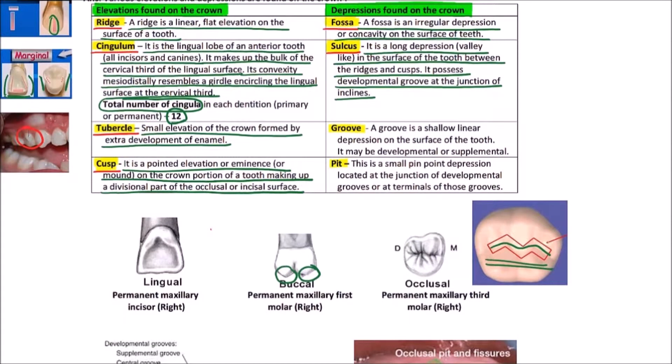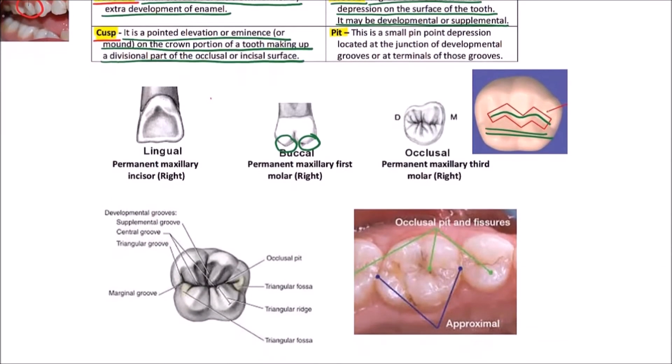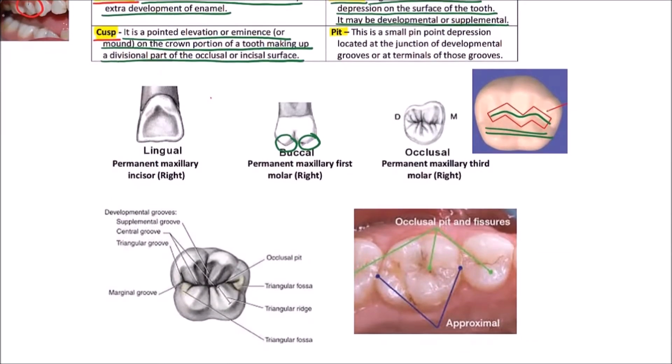Now, next one is groove. The groove is a shallow linear depression on the surface of the tooth. It may be developmental or supplemental. Here we can observe the triangular grooves.